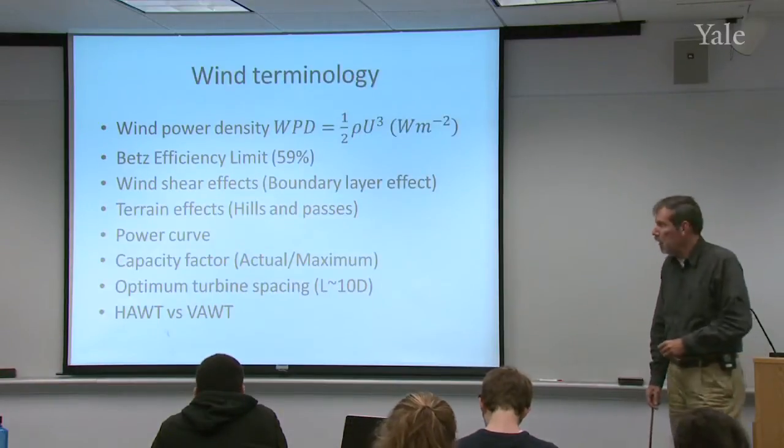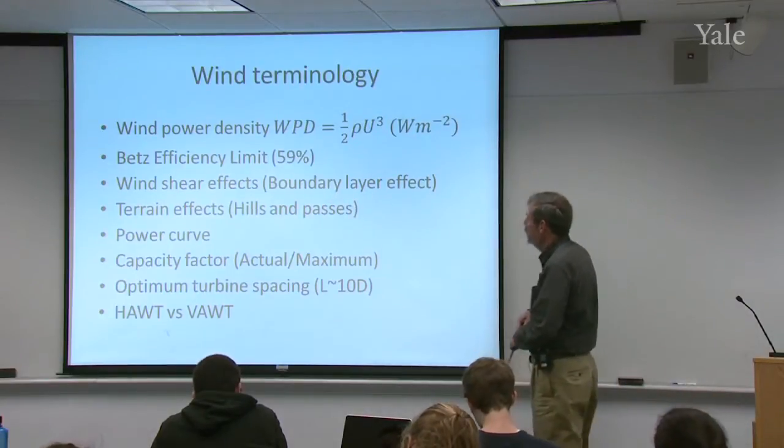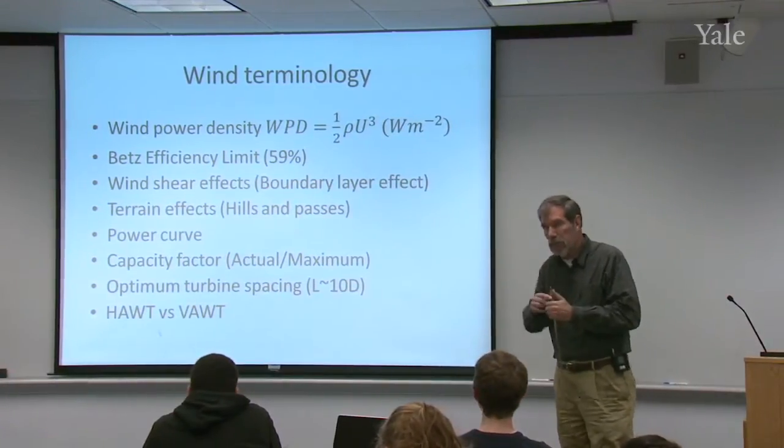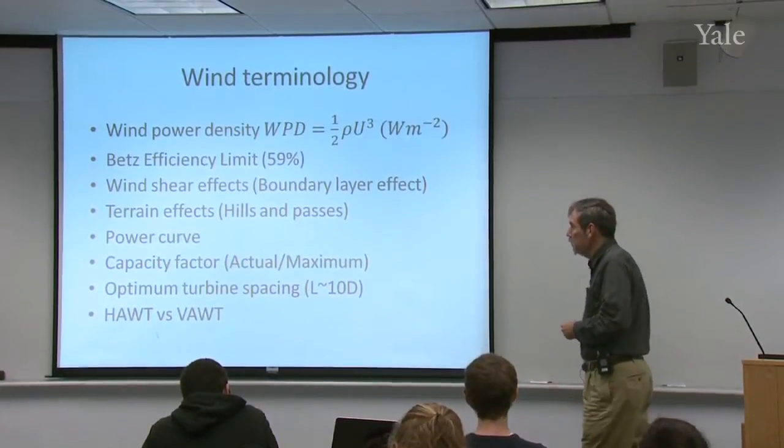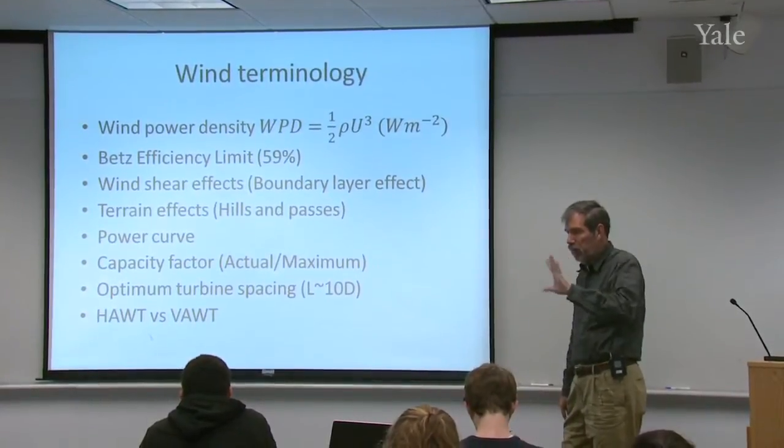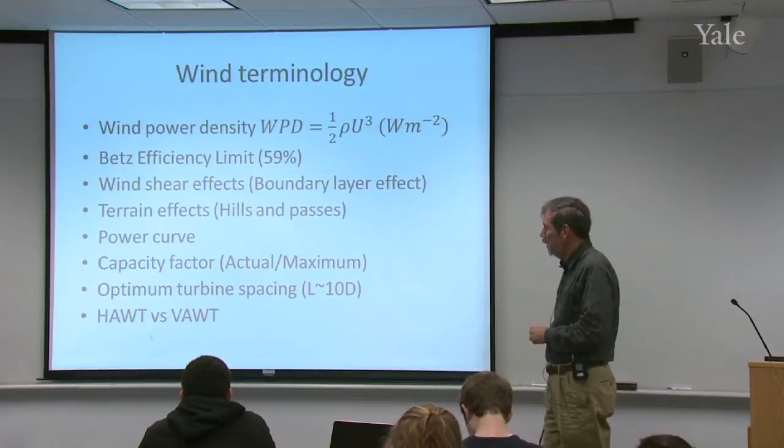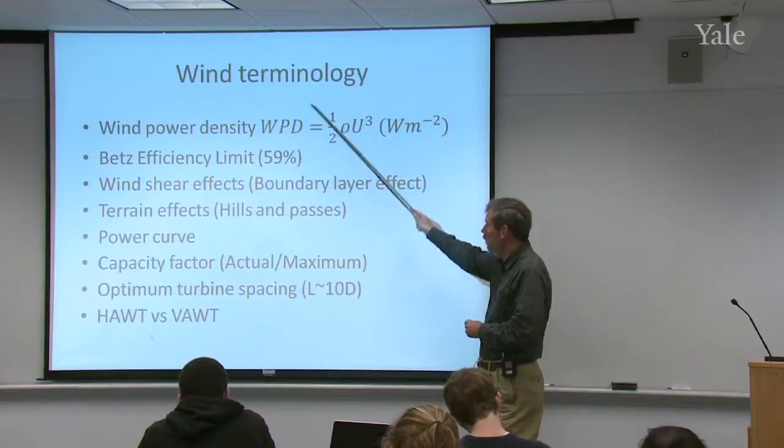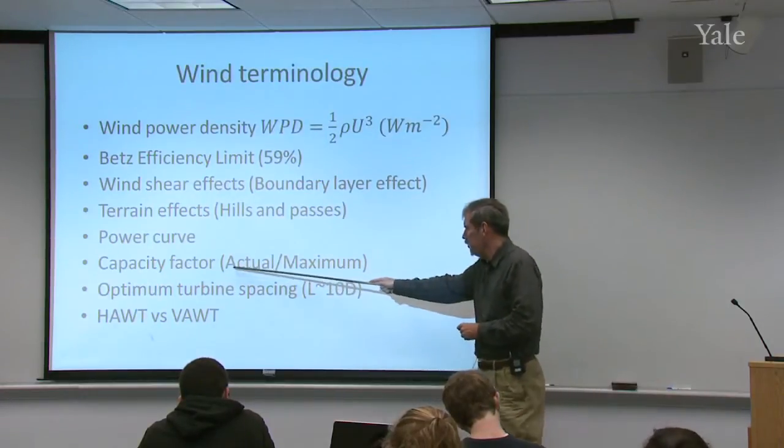Some of the terms we're going to be dealing with today. I'm going to derive for you something called the wind power density, how much kinetic energy is in the wind. That will tell us how much energy we can get out of the wind. We'll talk about the Betts efficiency limit, wind shear effects in the boundary layer, because most of our wind turbines are put in the boundary layer, and terrain effects for wind.